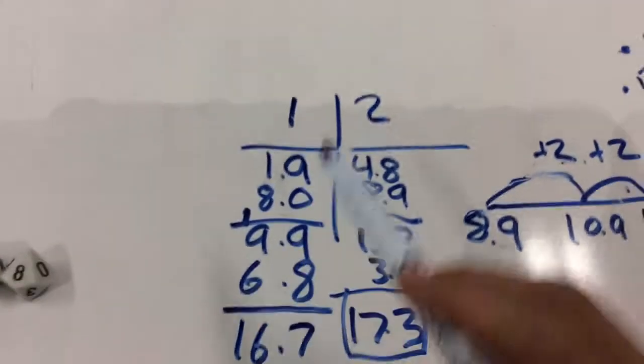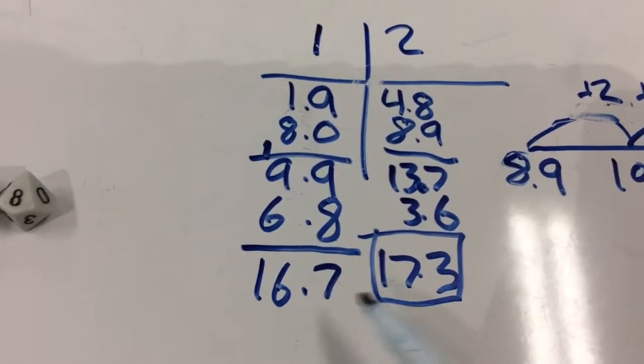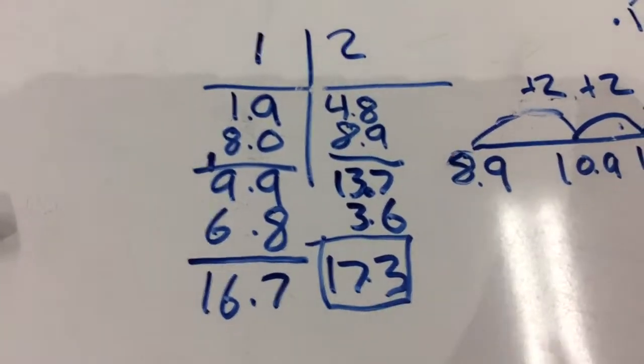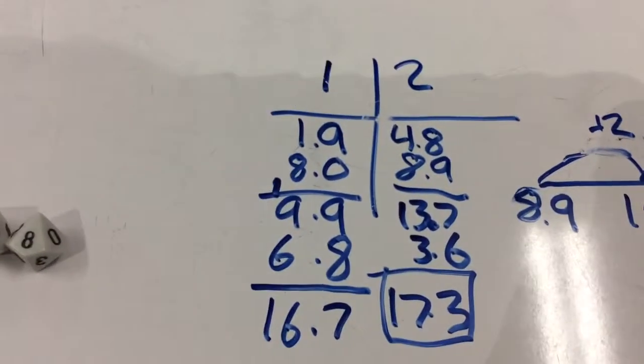So they end up, you look and you see who's closer. And you could see 16.7 is only 6.7 away from 10. And 17.3 is 7.3 away from 10. So my partner won the game.